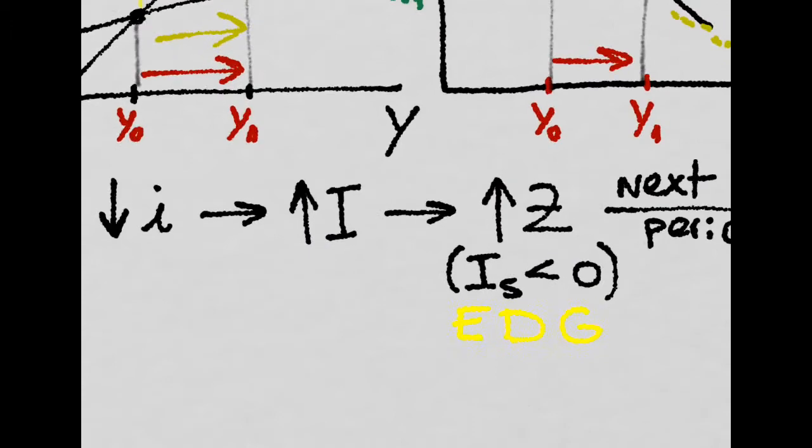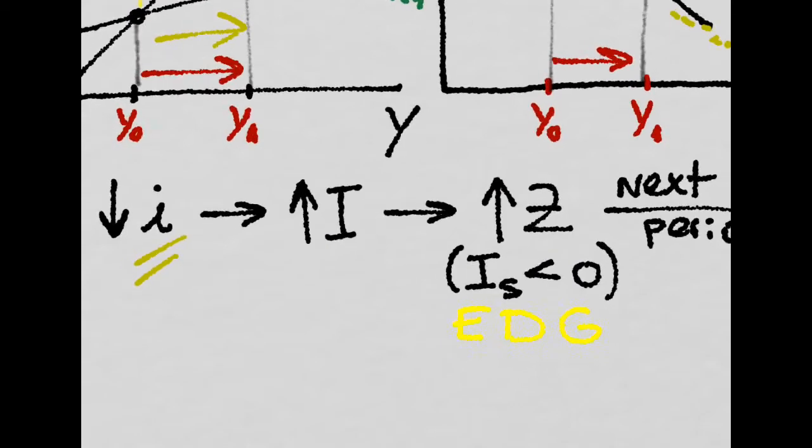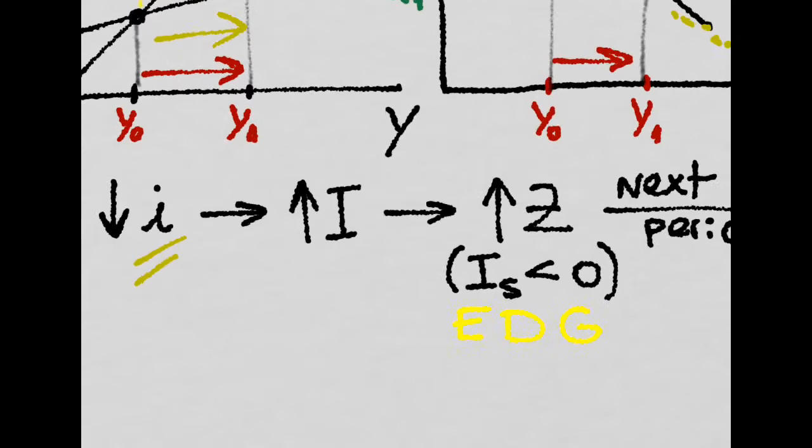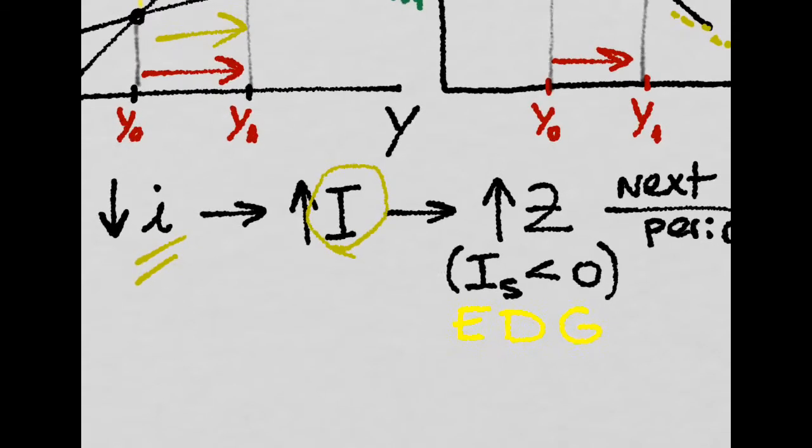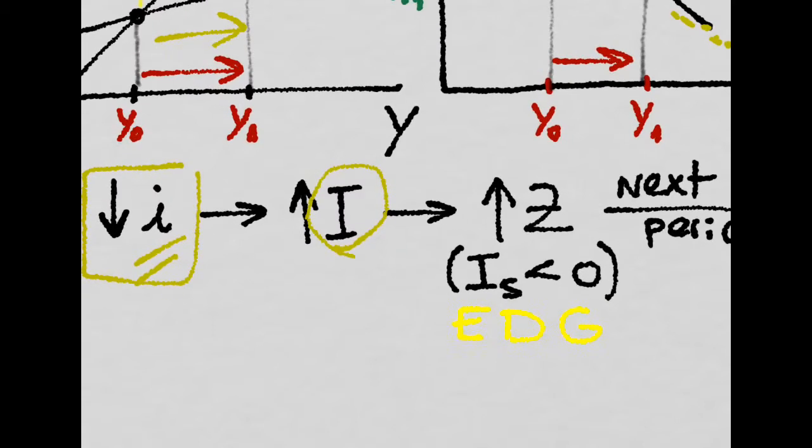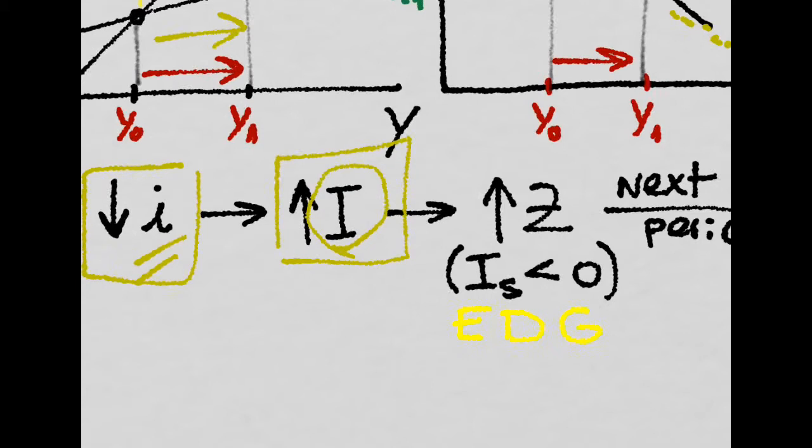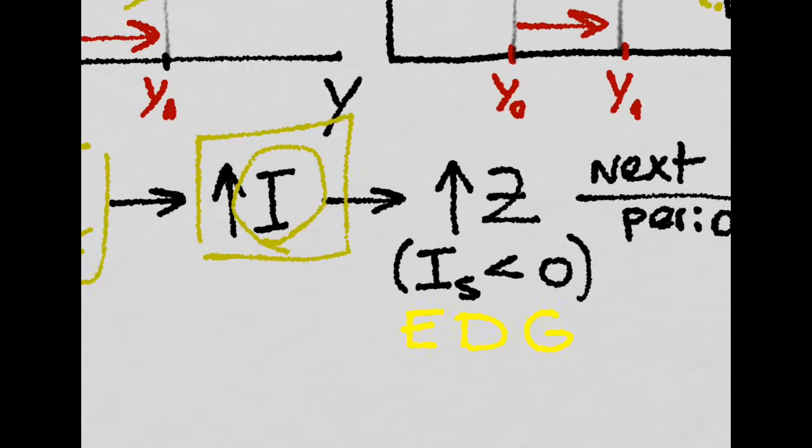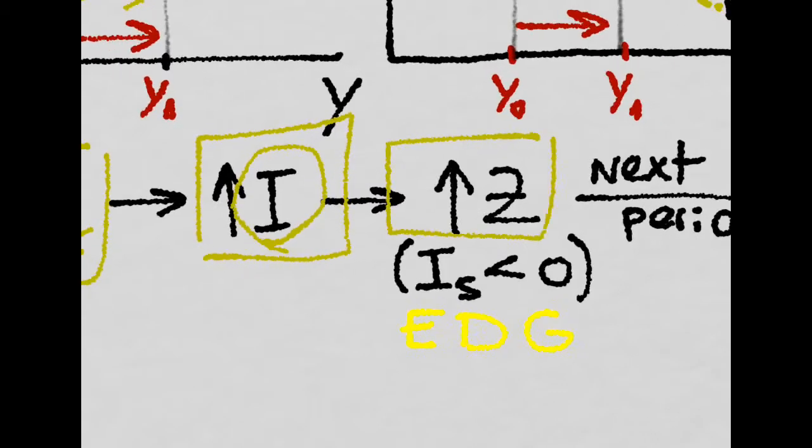So first, the interest rate is the opportunity cost of investing. If the opportunity cost of investing is lower because the return of buying bonds, which is the nominal interest rate, goes down, then investment will go up. But investment is just a component of aggregate demand. So aggregate demand will also go up.